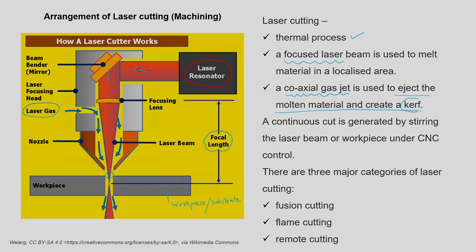We have a coaxial gas jet used to eject the molten material and create a kerf. The kerf is the width of the cut that is generated during the laser-based operation. To get a continuous cut, you must have relative motion between the laser beam and the workpiece. Either you move the workpiece in the XY plane or you move the laser beam in the XY plane. For this purpose we need computer numerical control (CNC) machine tools, which are commonly used in the industry.